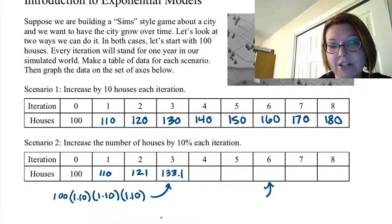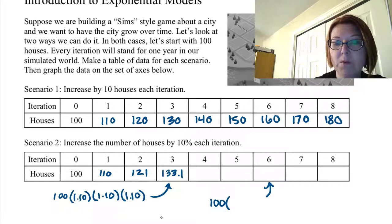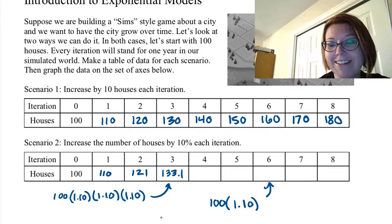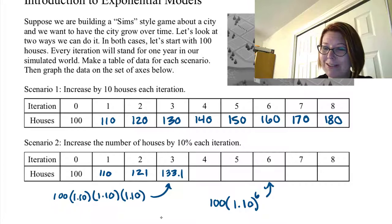When we get to a number like the sixth iteration, we could do 100 and then that's times 1.10 six times, or 1.10 to the sixth power. So we can continue to calculate all of these moving across the page.